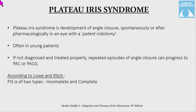Plateau iris syndrome is the development of angle closure, spontaneously or after pharmacological dilation, in an eye with a patent iridotomy. Often seen in young patients, if not diagnosed or treated properly, repeated episodes of angle closure can progress to primary angle closure or primary angle closure glaucoma. It can be incomplete or complete according to Lowe and Ritch.